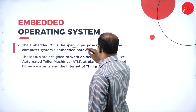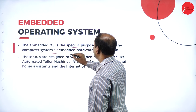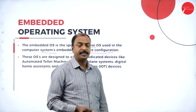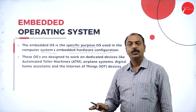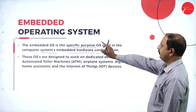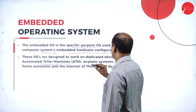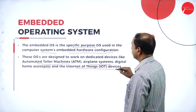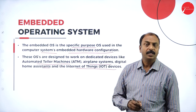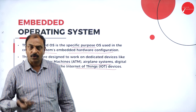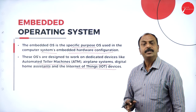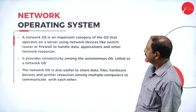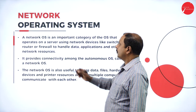The next type is the embedded operating system. An embedded OS is a specific-purpose operating system using computer systems with embedded hardware and configuration. The term 'embedded' means additional software or hardware incorporated along with the computer system or application software. Good examples include ATM machines, airplane systems, traffic systems, digital home assistants, and IoT (Internet of Things) devices.